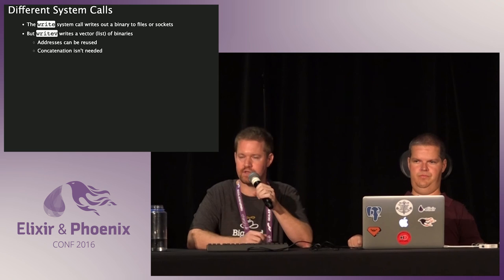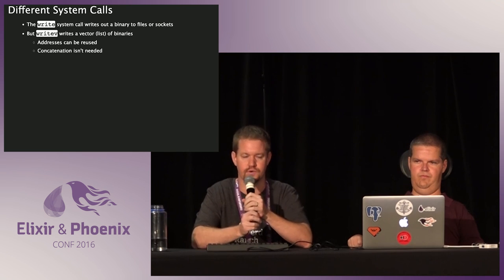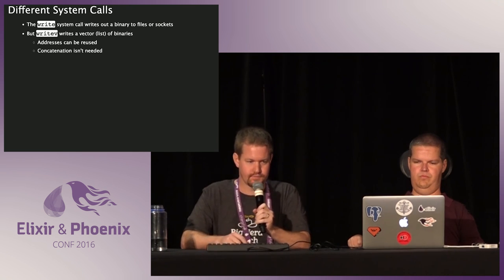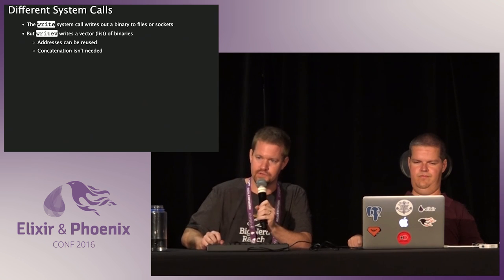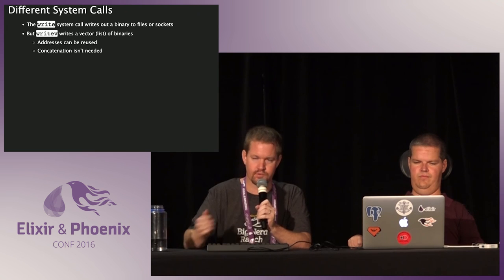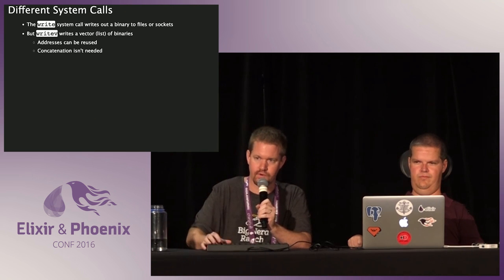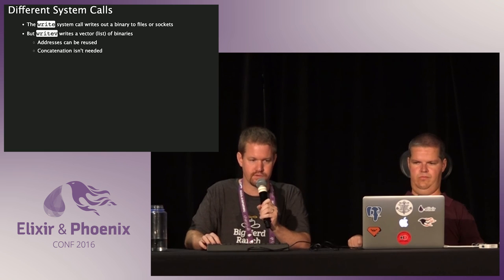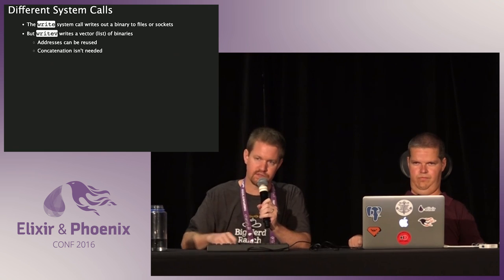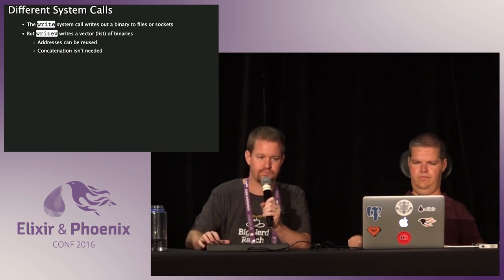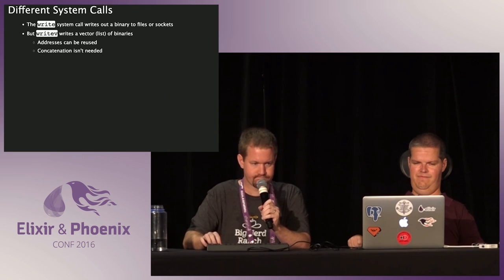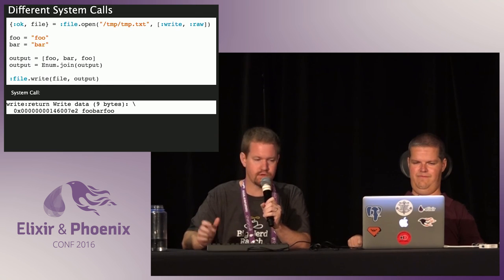There are actually different system calls that can be used to write data to a disk or socket. One of them is `write` — very straightforward, it just writes the data. The way `write` works is it says: please go to this address in memory and pull this many bytes out of it and write it to wherever I'm trying to write. `writev` — the V is for vector — takes a list of things. We can say: please write this item, and this item, and this item, giving it addresses for each one.